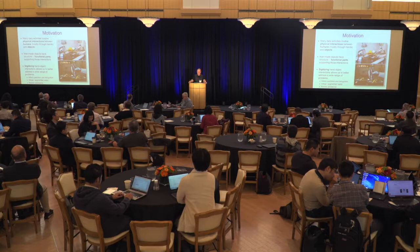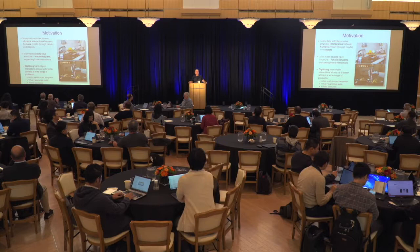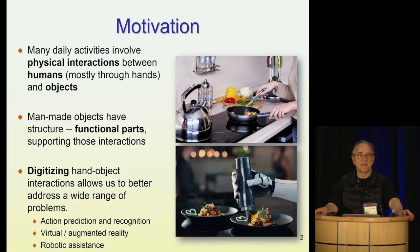The idea of this effort is if we can understand and encode in digital form this structure of objects that relate to their function and the actual interactions they have with humans, then we can do a number of tasks better. We can do better action prediction and recognition in images and videos. We can do better virtual and augmented reality, and we can build better robots that assist humans.